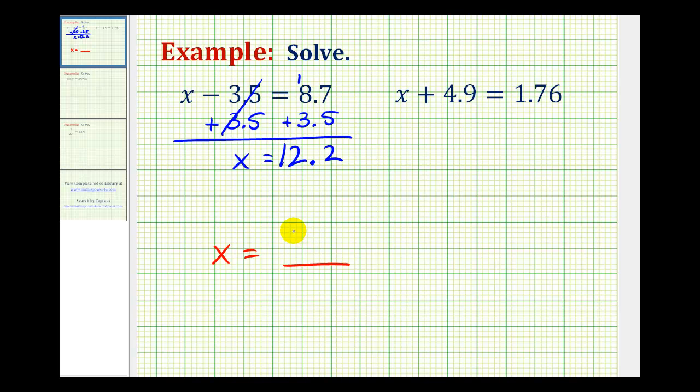So our solution is x equals 12.2, or 12 and 2 tenths. Which means 12.2 minus 3.5 must equal 8.7. And we can easily check this on our calculators.